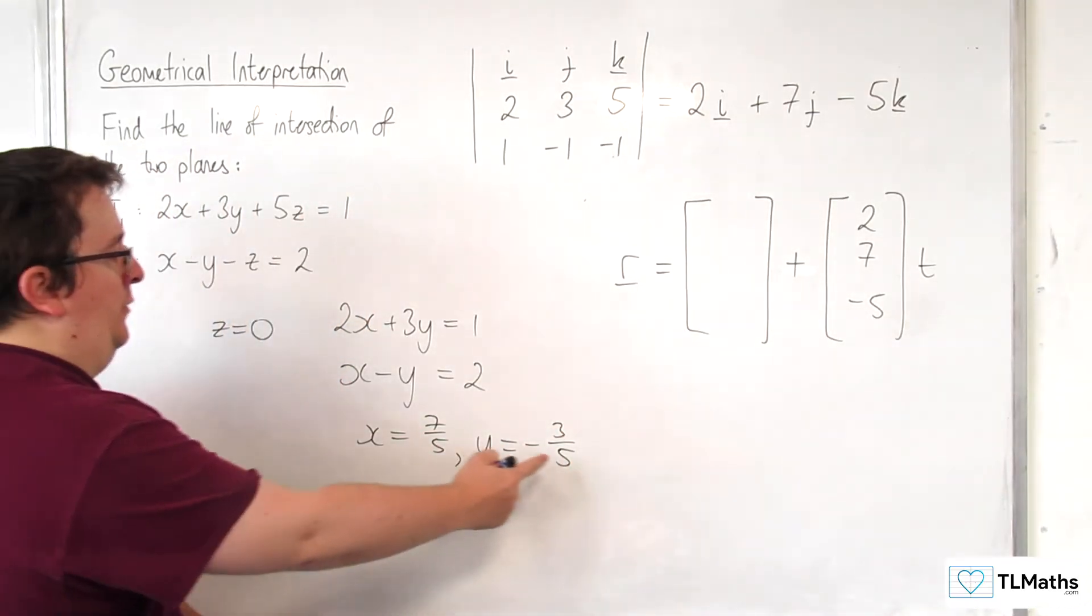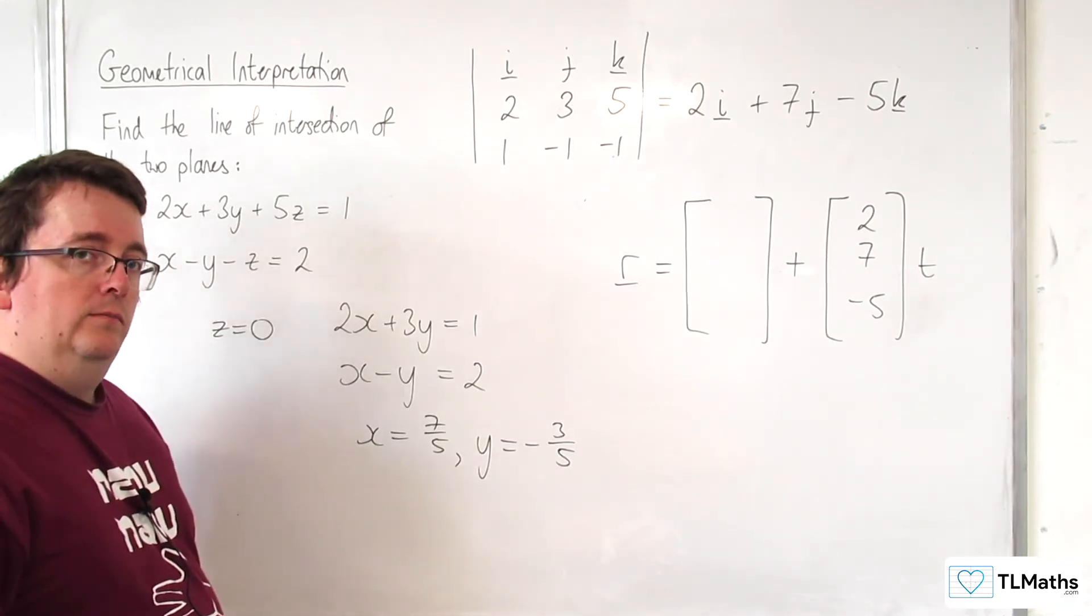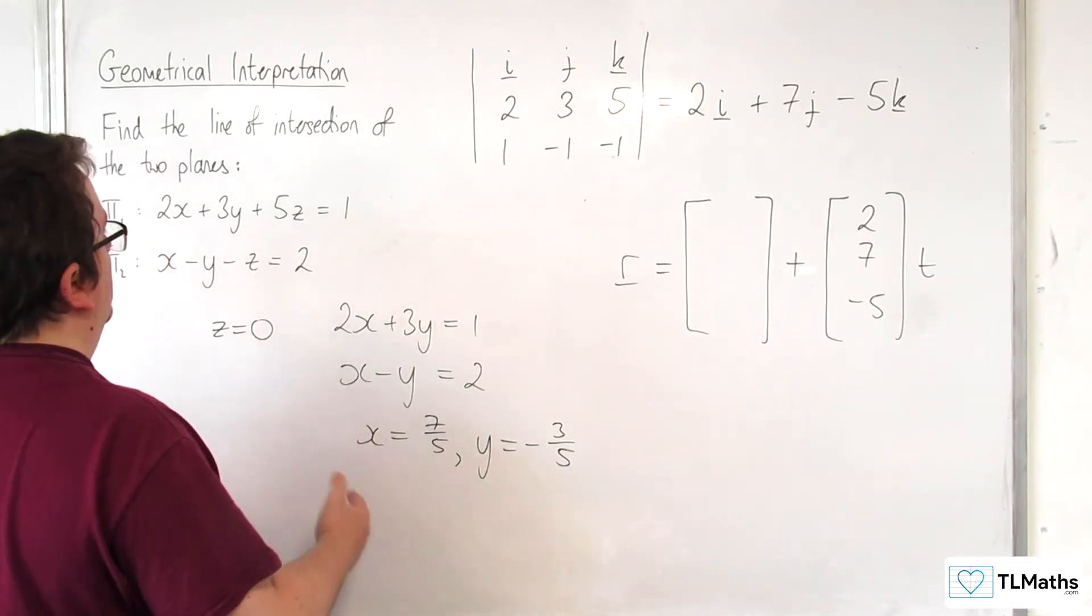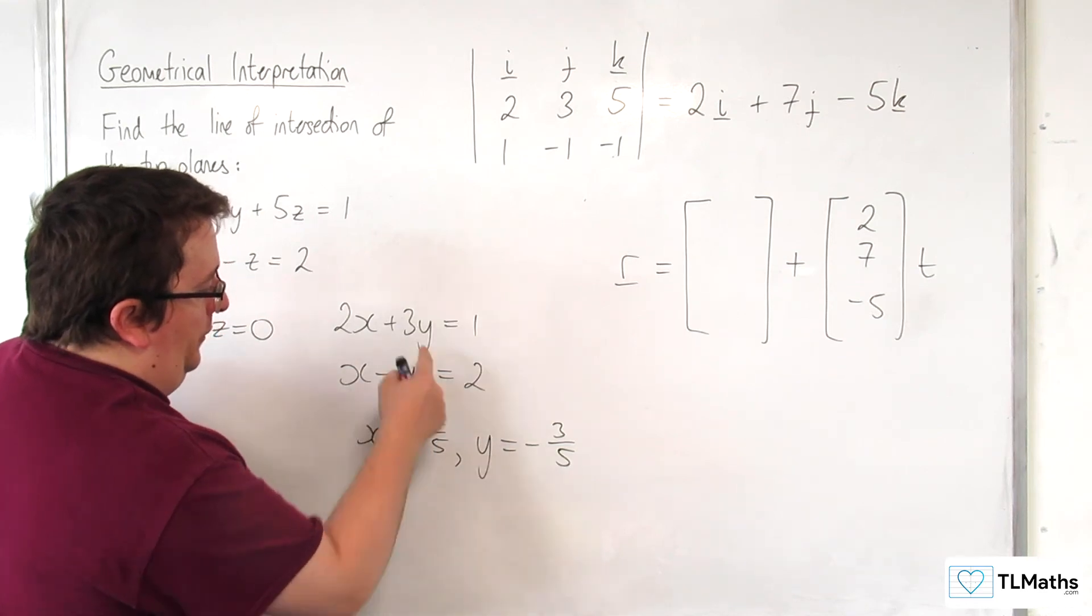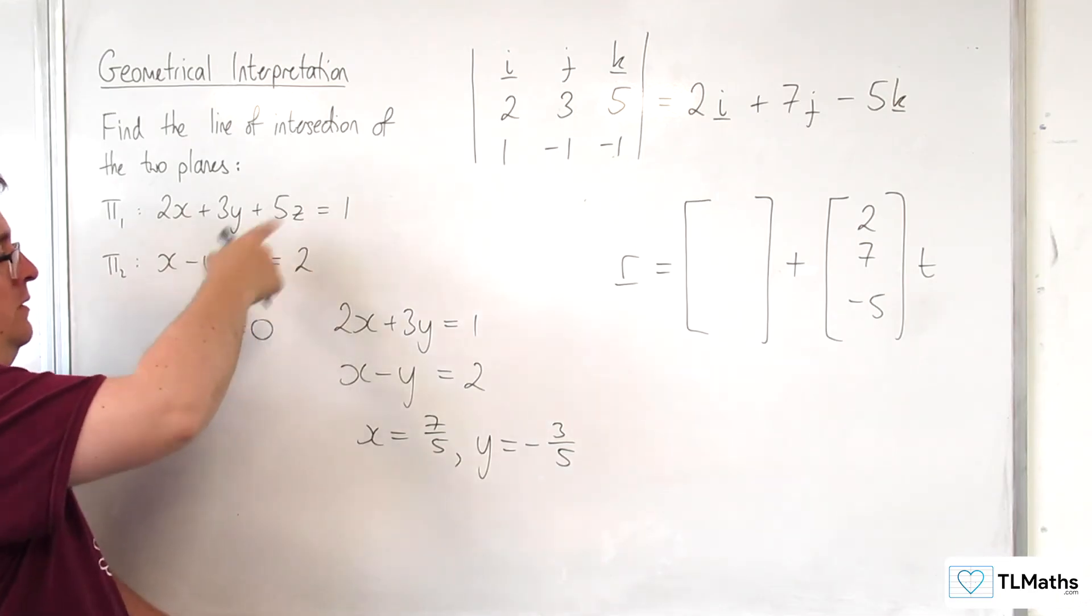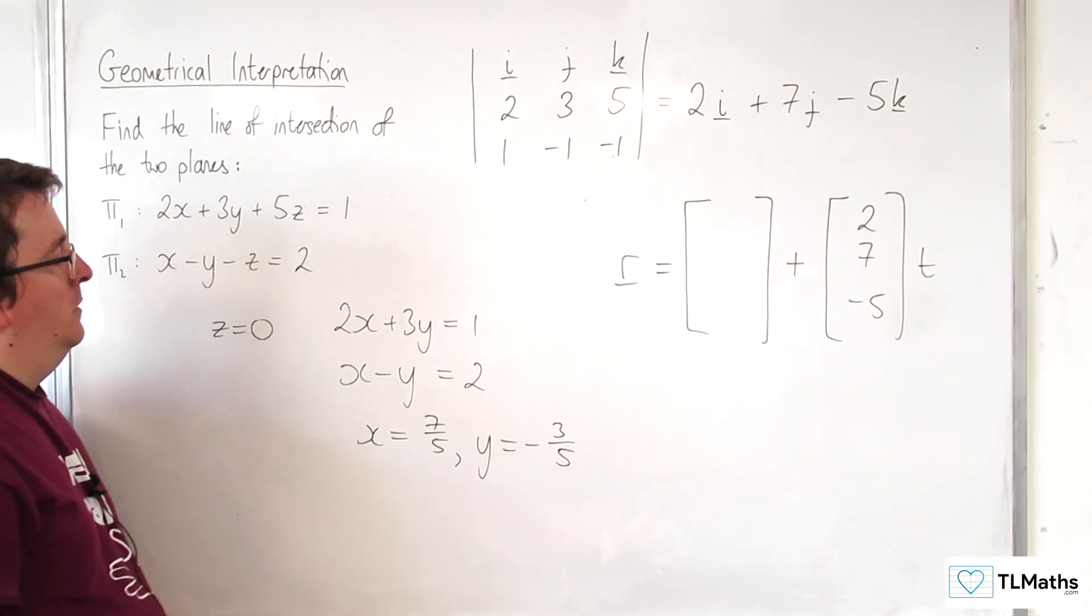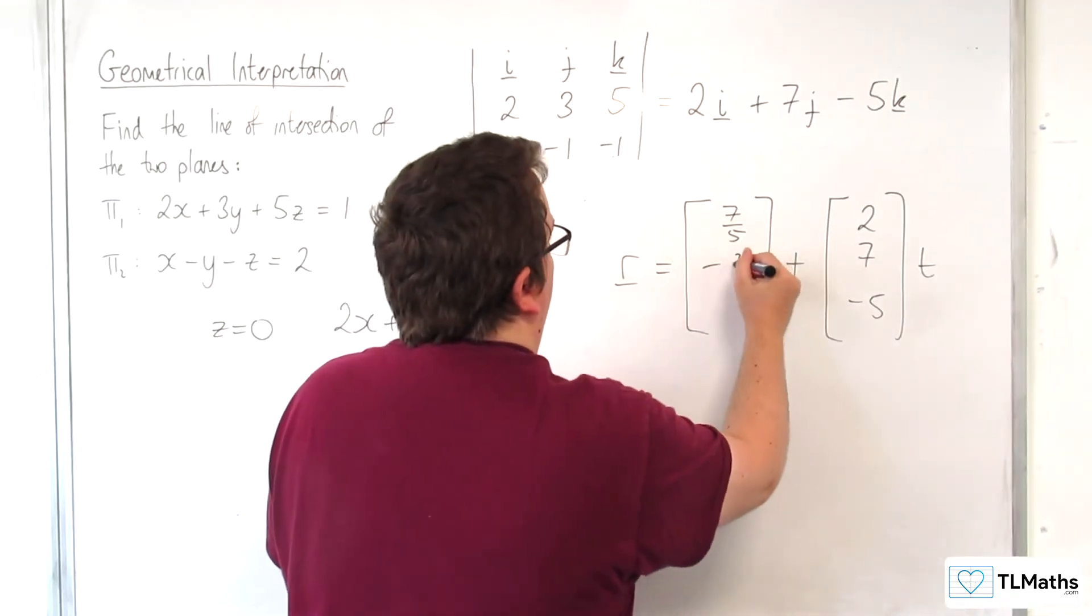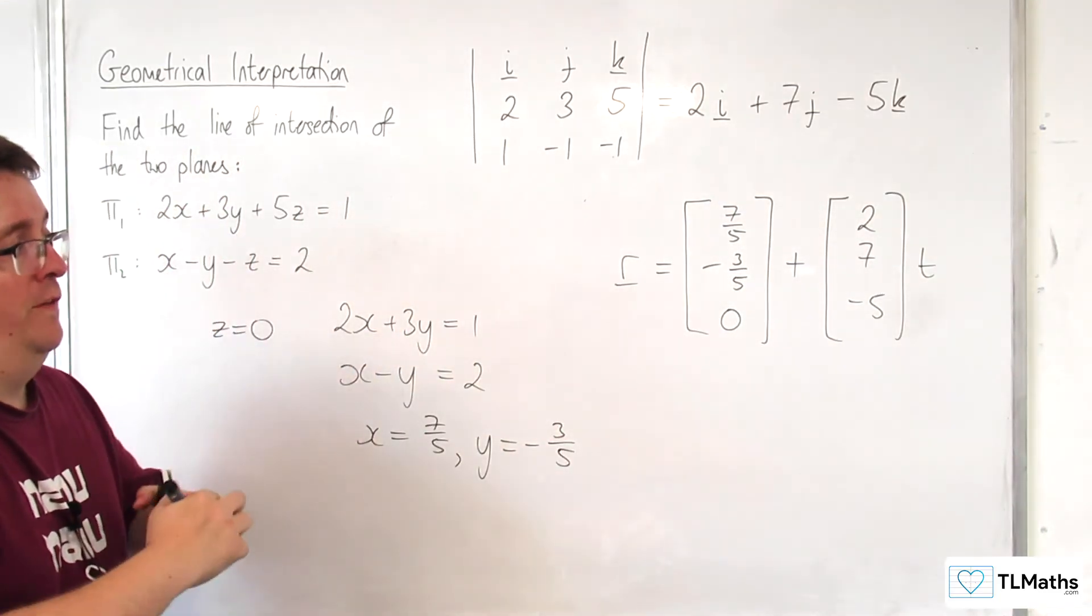So we've got the X, Y, and Z of a point that we know lies on both planes. Now you can double check that if you like, but you know that these solve these two equations when Z is 0. So they should work in both of those equations, both those planes. So we've got 7/5, -3/5, 0. There's a point on the line.